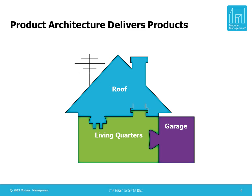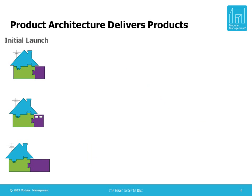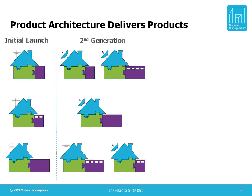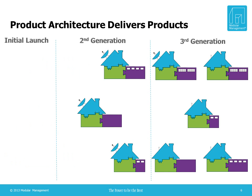A modular product architecture is a collection of modules used to deliver an evolving family of market-driven products. Each new generation will add or subtract variants from the collection to enable new technology as well as the phasing out of declining options. New products are developed, marketed, produced, and delivered within this framework.